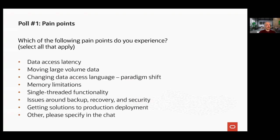We're seeing great responses. Memory limitations is coming in at 75%, moving large volume data at close to 70%, getting solutions to production deployment about a third of respondents, data access latency over 40%. Others are close to about 20% experiencing the other issues. That's really good feedback and it's important to have an appreciation for what our users are encountering.